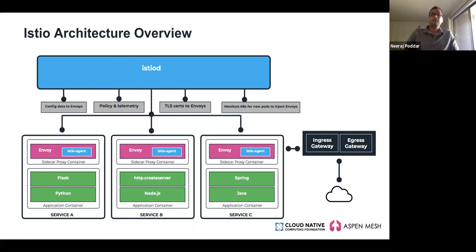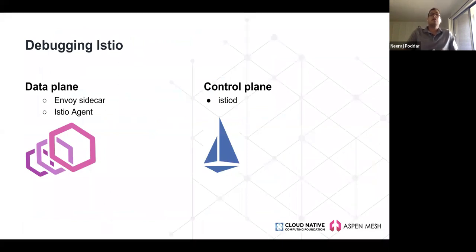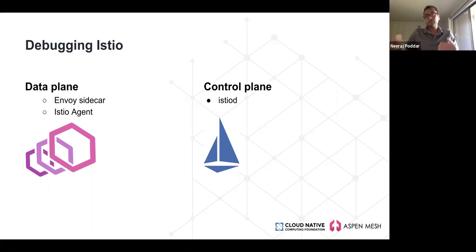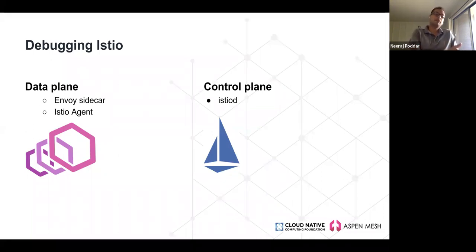Since Istio is logically separated into these components, to effectively debug it you must first triage whether the issue is with the control plane or data plane, and then determine whether the problem is in the Istio agent, the sidecar, or Istiod itself. I'll cover tools for diagnosing Envoy, John will cover tools for debugging Istio agent and Istiod, then we'll discuss common problems and a debugging guide, and finally I'll make recommendations for running Istio in production.